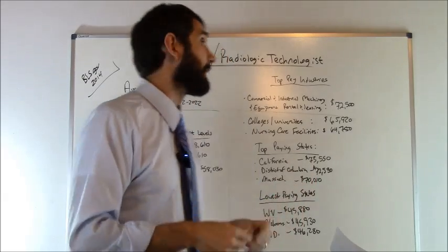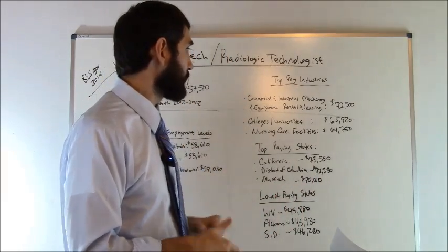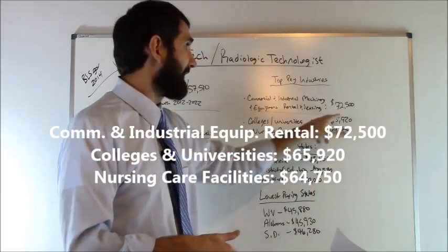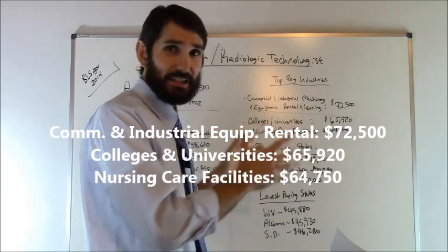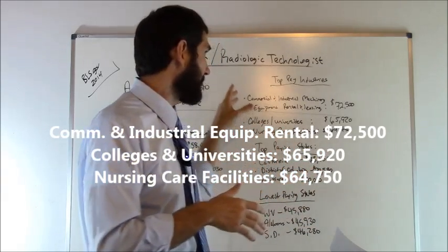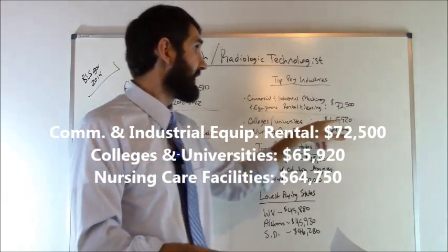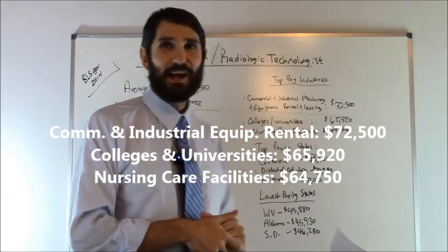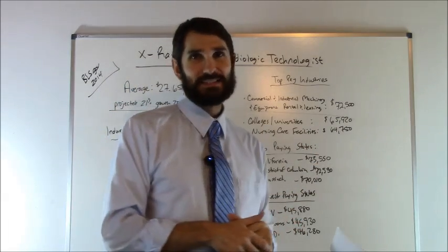What industries paid the most money though? Well, the top paying industry was commercial and industrial machinery and equipment rental and leasing, believe it or not. And the average there was $72,500. I guess these x-ray techs went and worked for a company that developed the machinery maybe. Second, colleges and universities came in at number two, $65,920. And then nursing care facilities came in at number three, the average salary, $64,750.